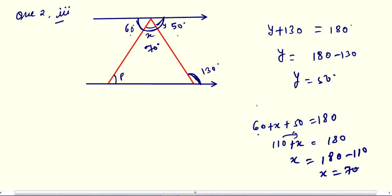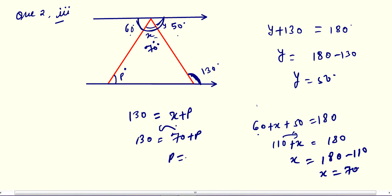This X is 70 degrees. Now 130 is an exterior angle, so 130 equals the sum of the two opposite interior angles, which are X and P. So 130 equals 70 degrees plus P. Transposing to the left-hand side, P equals 130 minus 70, so P equals 60 degrees.